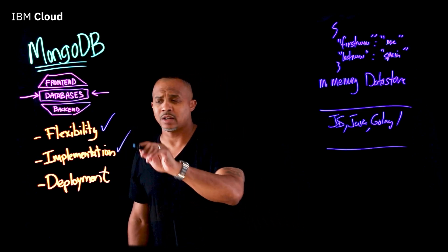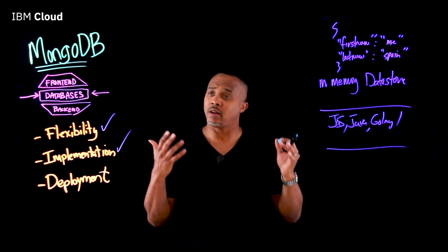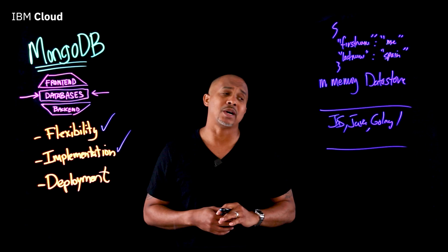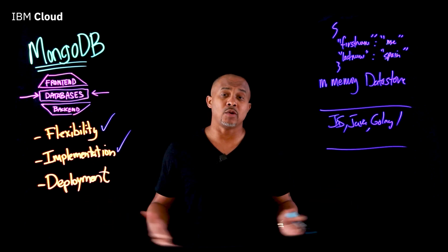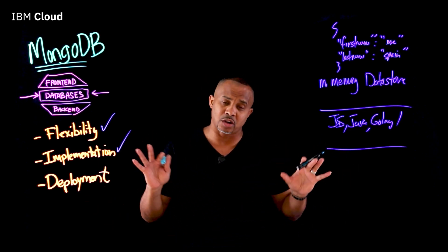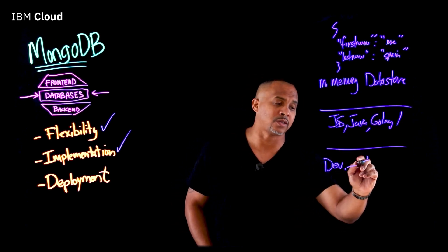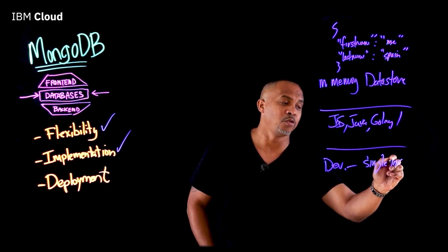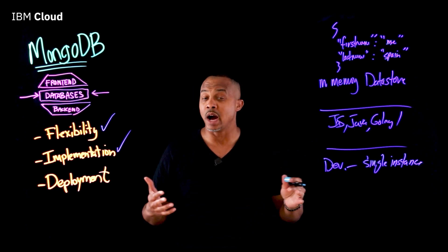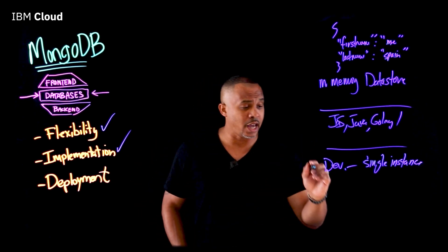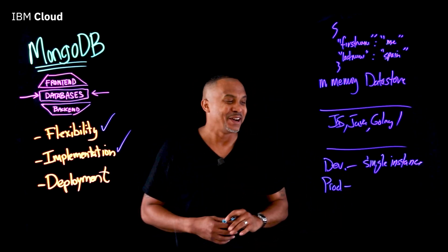Let's talk about deployment. After the check mark on implementation, for deployment, you can set up MongoDB relatively — I wouldn't say easily, but there are easy ways to facilitate it, whether it's on containers or on your own Linux servers. You can set up an instance without security, very easy to play with. For development, it's very easy to set up a single instance and prove out how easy it is to implement into your architecture, whether you're architecting for web or mobile.